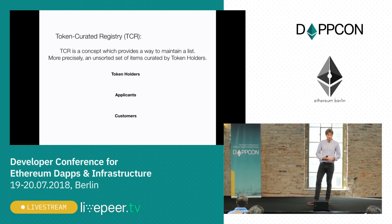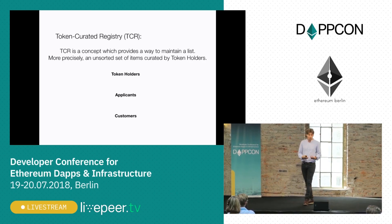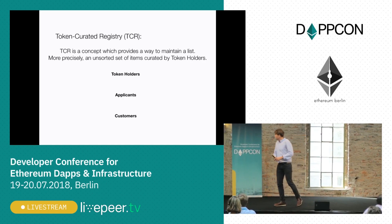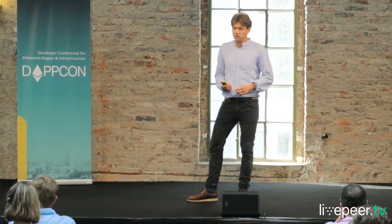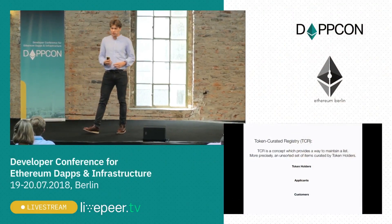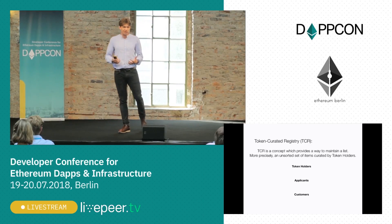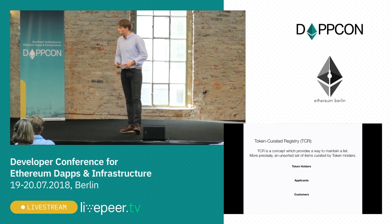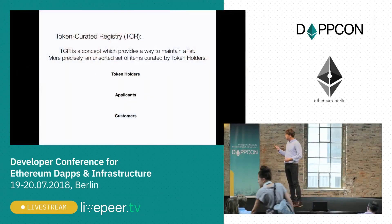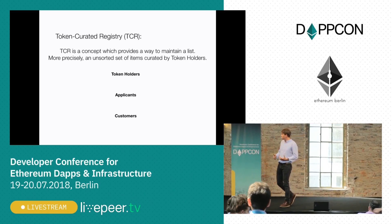There are three roles, three groups of individuals who are interacting with the registry. There are customers who don't need to have any tokens in order to participate - they're just interested in the content provided by each specific registry. We also have applicants, somebody who wants to get onto the list, and they're going to need tokens from the specific registry to put a deposit to be reviewed by token holders. Token holders basically have economic incentives to curate and maintain the list at a quality that customers would actually like to consume. For example, universities might be applicants who would like to get on the list, and parents or students choosing a university to apply for might be customers.